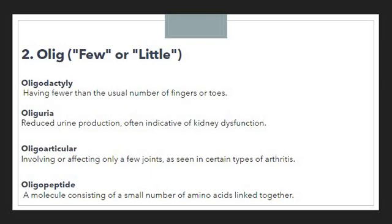For example, if someone is suffering from arthritis but only a few joints are affected, we use the terminology 'oligoarticular,' where olig represents very few or less, and articular refers to the joints.